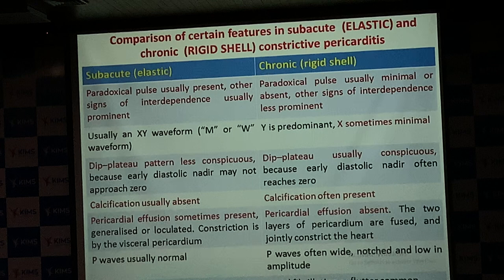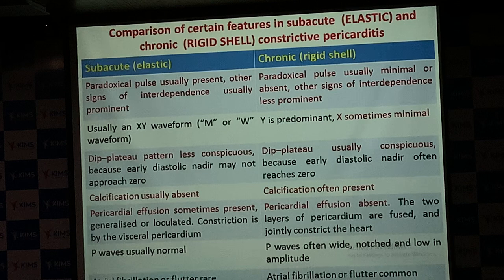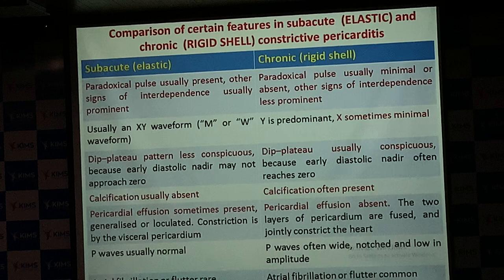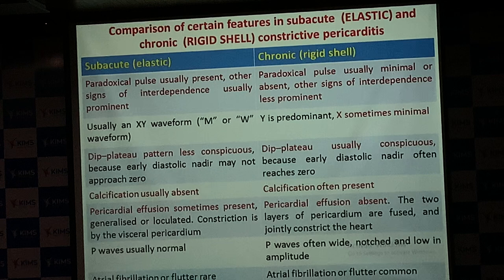P waves on ECG are usually normal in elastic constrictive pericarditis. In rigid shell, the atrium is also invaded, so there may be wide, tall, or notched P waves. Atrial fibrillation and atrial arrhythmias are far more common with rigid shell constrictive pericarditis than with elastic type.